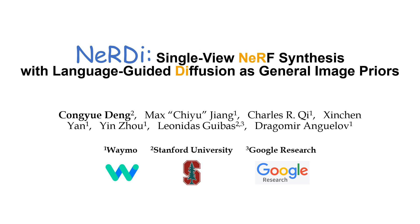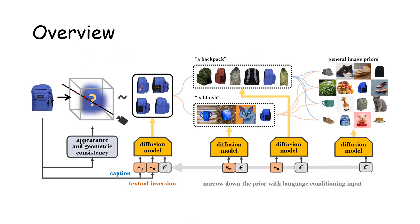We propose NERDY, a framework for single-view NeRF synthesis with language-guided diffusion as general image priors. We present a single image NeRF synthesis framework for in-the-wild images without 3D supervision, by leveraging general priors from large-scale image diffusion models. Given an input image, we optimize for a NeRF by minimizing an image distribution loss for arbitrary view renderings.